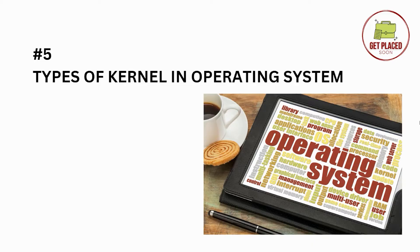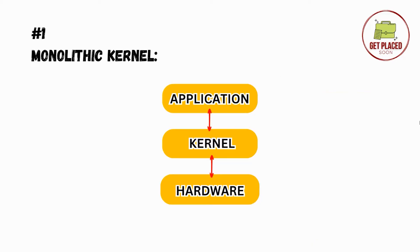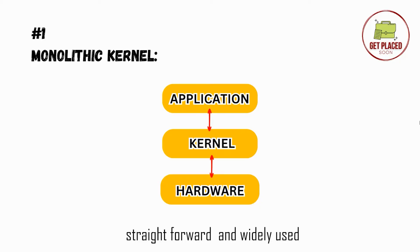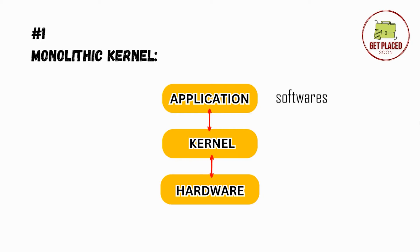The first type of kernel we're going to discuss is monolithic kernel. The monolithic kernel is the most straightforward and widely used type of kernel. You can see how simple the design is — applications are nothing but softwares, and they are connected with the kernel, which is connected with the hardware. The design is pretty simple and straightforward.